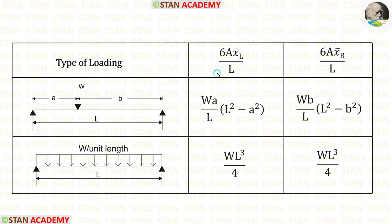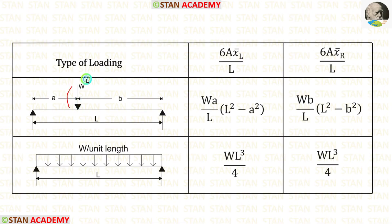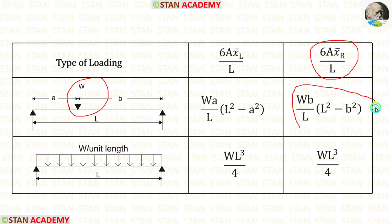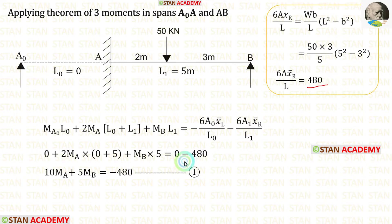Alternatively, using a formula we can calculate these two terms and save a lot of time. First, let us take spans A0A and AB. Here we have to calculate 6A·x̄right/L. Since a point load is acting in the span, the formula is (WB/L)(L² − B²). Here W is 50, B is 3, and L is 5. When we apply the values inside the formula we are getting 480. Let us apply this value in the equation — so easily we are making the first equation.